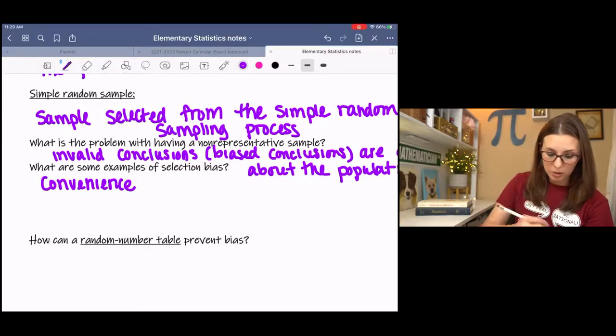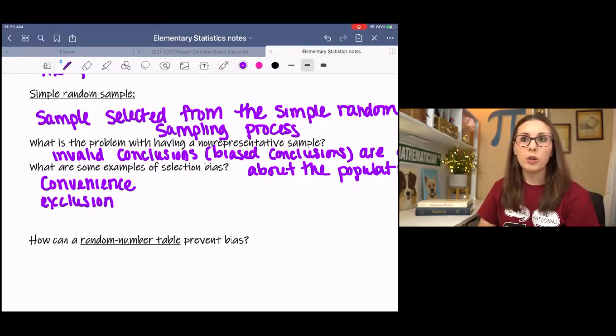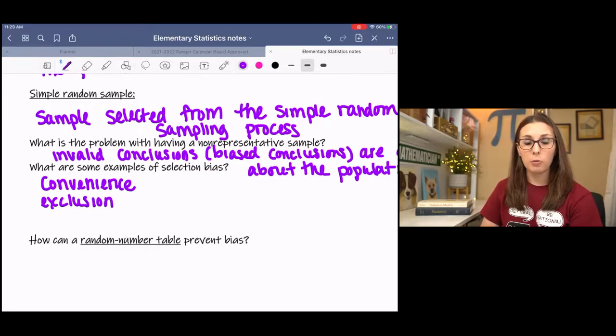Another one would be exclusion. For example, if you contact everyone in the phone book or something like that. Phone books are pretty small nowadays. If you contact everyone in the phone book with a landline, while you may be able to talk to everyone with a landline, how many people actually have a landline? Or how many people are home when you called? So you can exclude a certain portion of the population or your sample when you choose things like that.